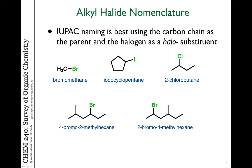If we name these according to IUPAC rules, methyl bromide becomes bromomethane, cyclopentyl iodide becomes iodocyclopentane, and secondary butyl chloride becomes 2-chlorobutane. Notice we take the halogen substituent, drop the -INE ending from the halogen name, and add an -O. So chlorine becomes chloro, fluorine becomes fluoro, bromine becomes bromo, and iodine becomes iodo.